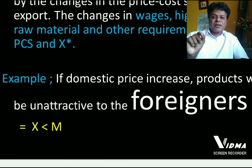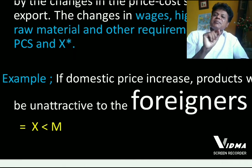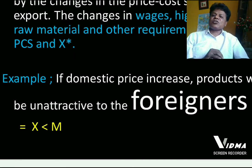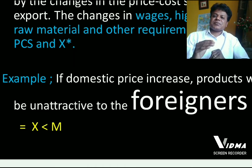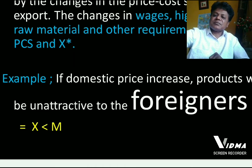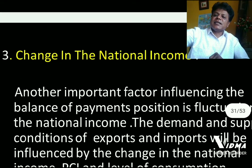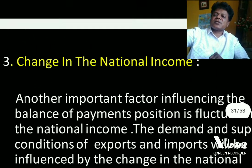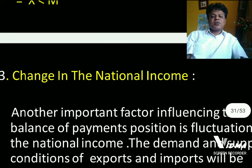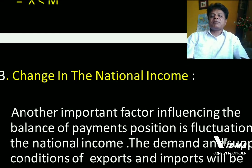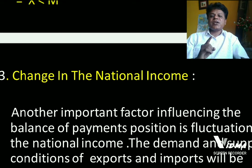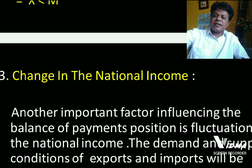We have taken the example of how deficit in the balance of payment results from a change in price and cost structure at the domestic level. In the next slide, we are going to study the third cause for disequilibrium in the balance of payment — change in national income.